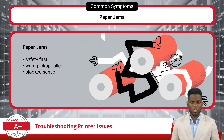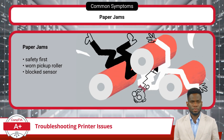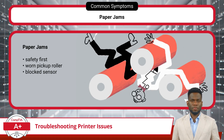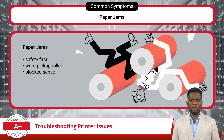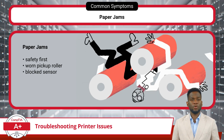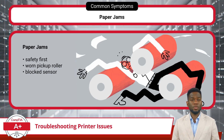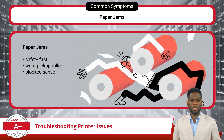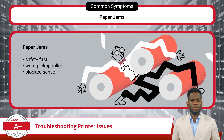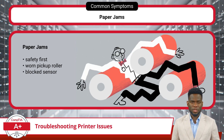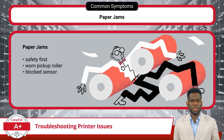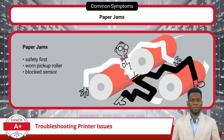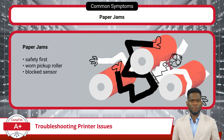Paper jams are a frequent nuisance in printers, disrupting workflow and causing frustration. When confronted with a paper jam, remove the device from service and disconnect the printer from the power source to minimize risk of electrical shock, moving parts, or burns from a hot fuser unit. Carefully examine the printer's paper path to identify and remove obstructions. If jams occur frequently, inspect the pickup roller for wear or contamination, and clean or replace it. If an error message persists after clearing the jam, investigate for a blocked paper jam sensor.